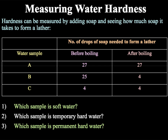Looking at the first question — which sample is the soft water? — we can see that sample C requires very few drops to form a lather both before and after boiling, so water sample C is our soft water. For the temporary hard water, water sample B shows that lots of drops are required before boiling but only a small amount after boiling to form a lather, so sample B is our temporary hard water. This leaves sample A as our permanent hard water, since there is no change in the number of drops required before or after boiling.